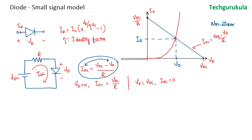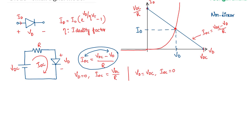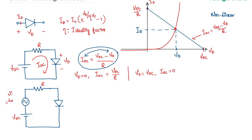Now let's say on top of this DC we are going to apply an AC signal. Let's call the applied voltage VDC, and the AC source is Vi which equals Vm sin(ωt). If the diode were a linear element, we could have done analysis independently — DC analysis separately and AC analysis separately — and add both of them to find the response. But the characteristics of the diode are non-linear. The current that flows will have both a DC component and an AC component.